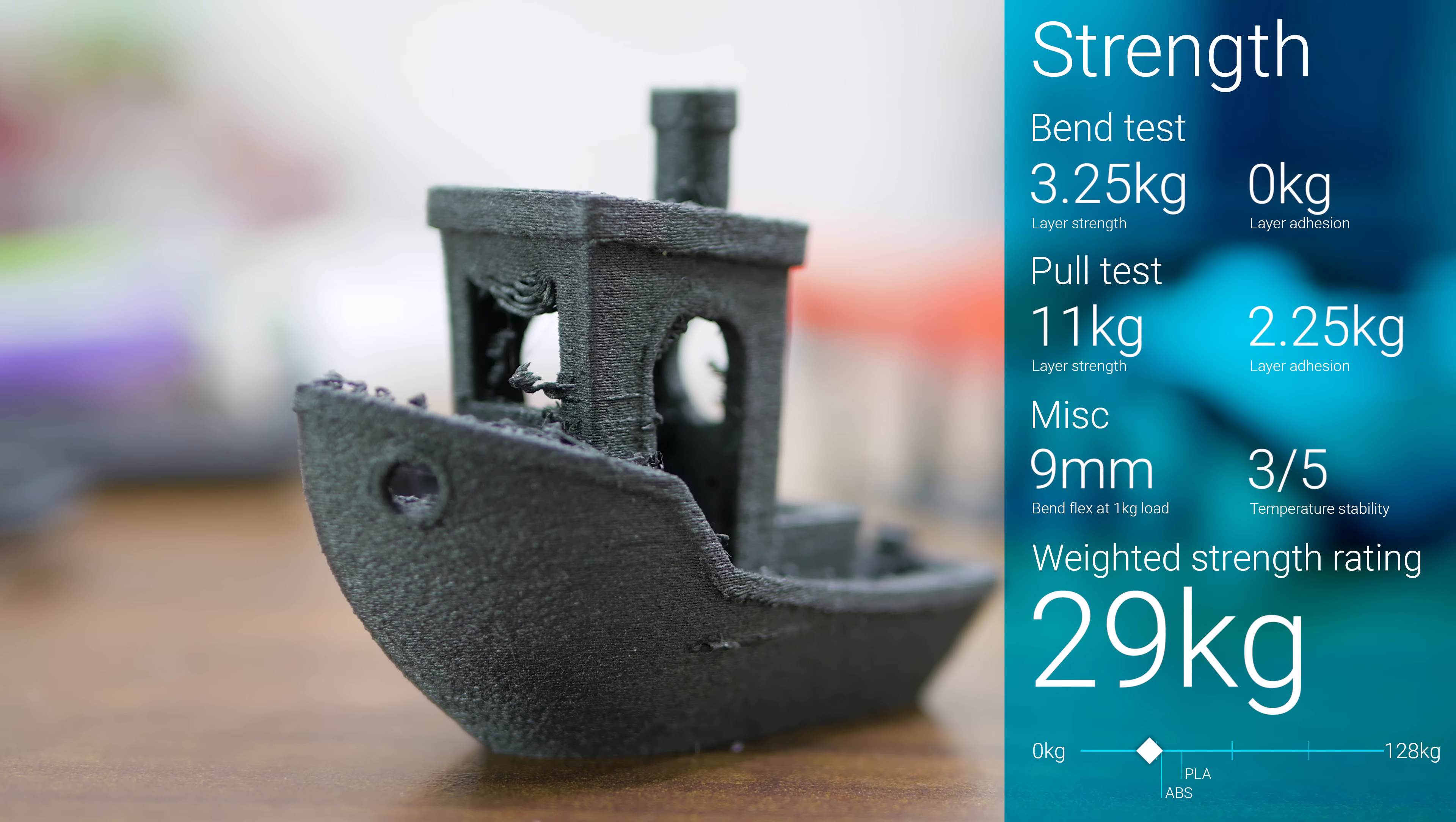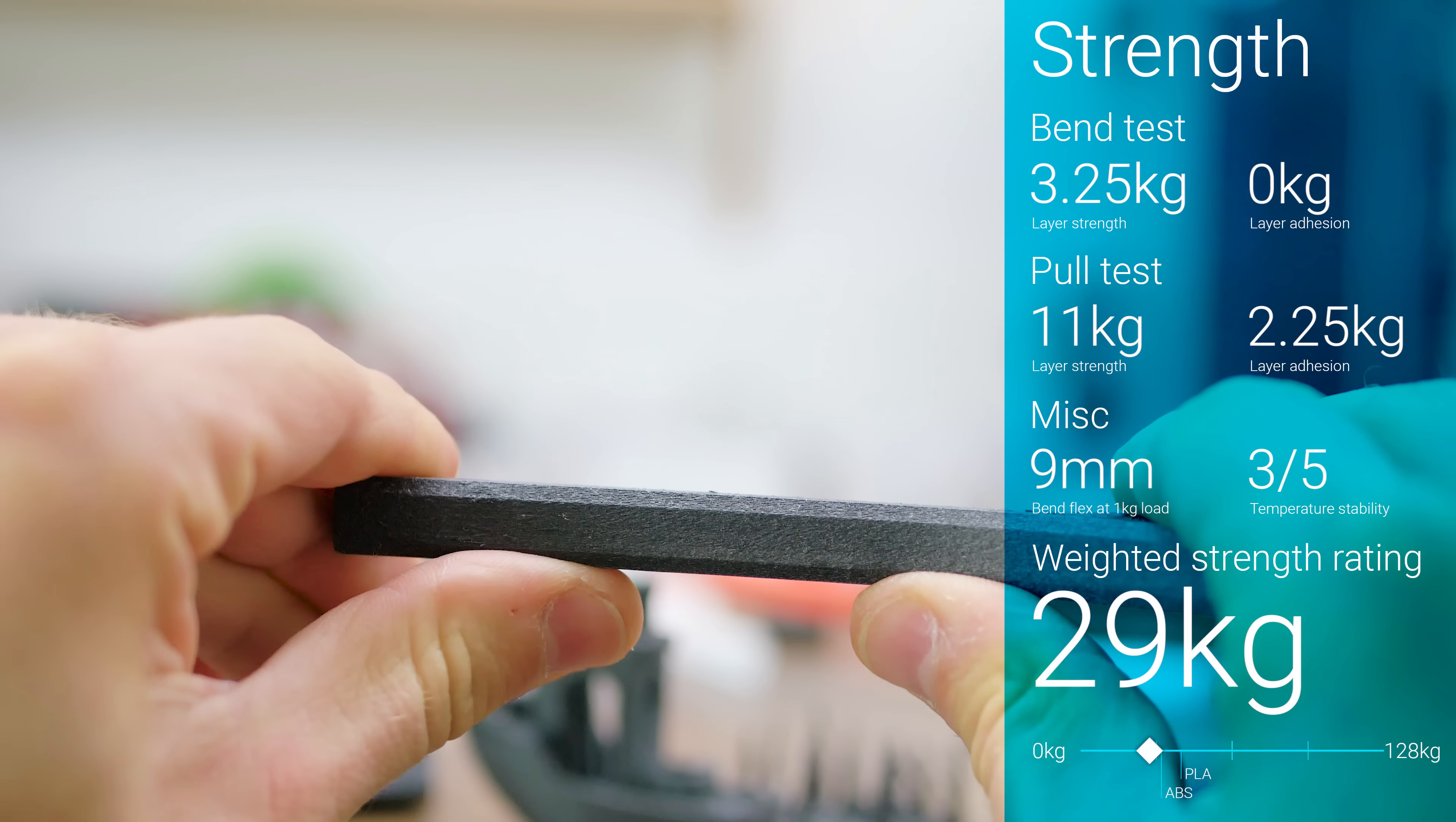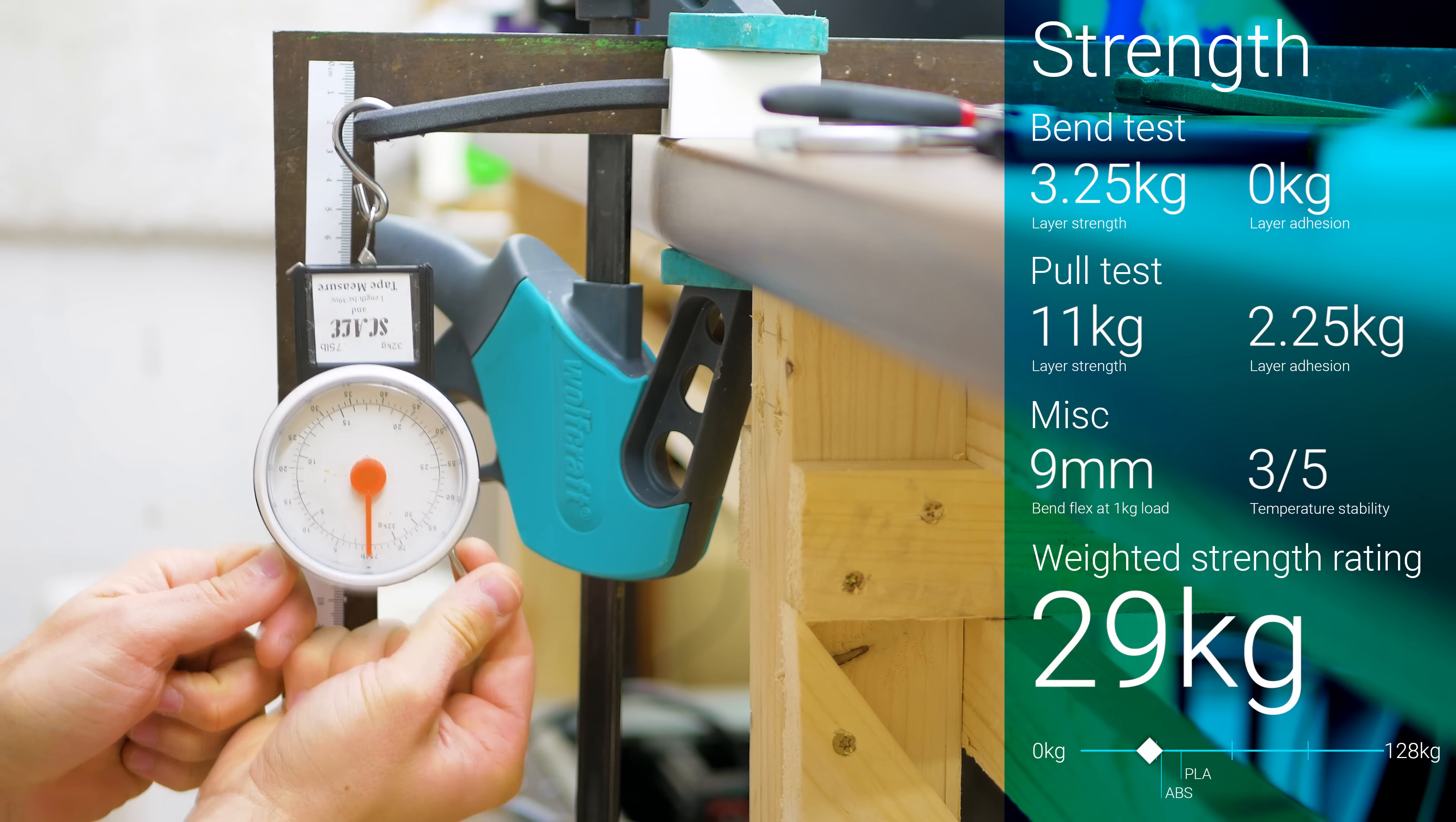As long as the load on your printed parts stays parallel to the layers, you'll see good strength and an exceptionally low amount of flex. However, as soon as the load needs to traverse layer boundaries, both the stiffness and the ultimate strength drop considerably.